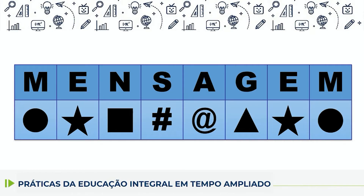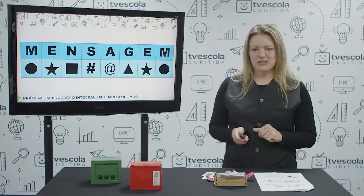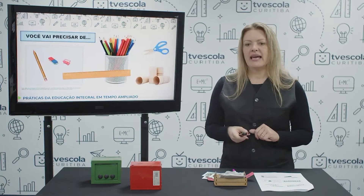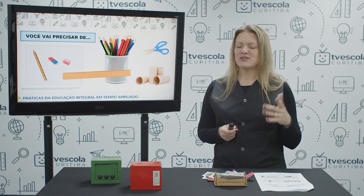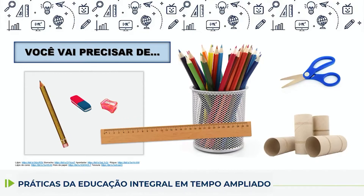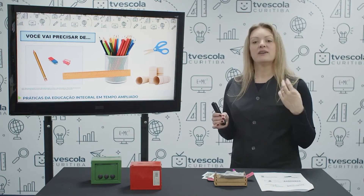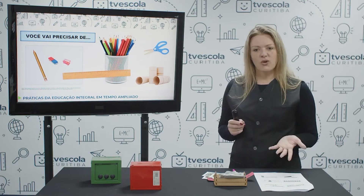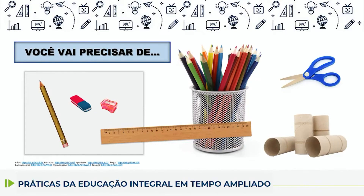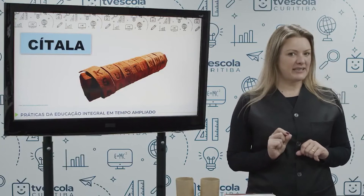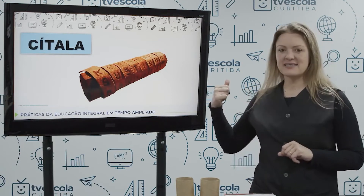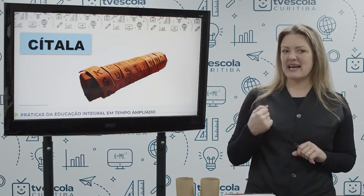Para entender um pouco melhor — um abaixo do outro: a palavra com letras, a palavra codificada e os símbolos correspondentes. E agora nós vamos realizar uma atividade. Aqueles materiais que eu pedi que vocês conversassem com os familiares para organizarem — vamos precisar de folha de papel sulfite, lápis, borracha, apontador, régua, lápis de cores, tesoura e os rolos de papel higiênico. Eu vou mostrar como nós podemos utilizar a ideia da Cítala para enviar uma mensagem secreta.